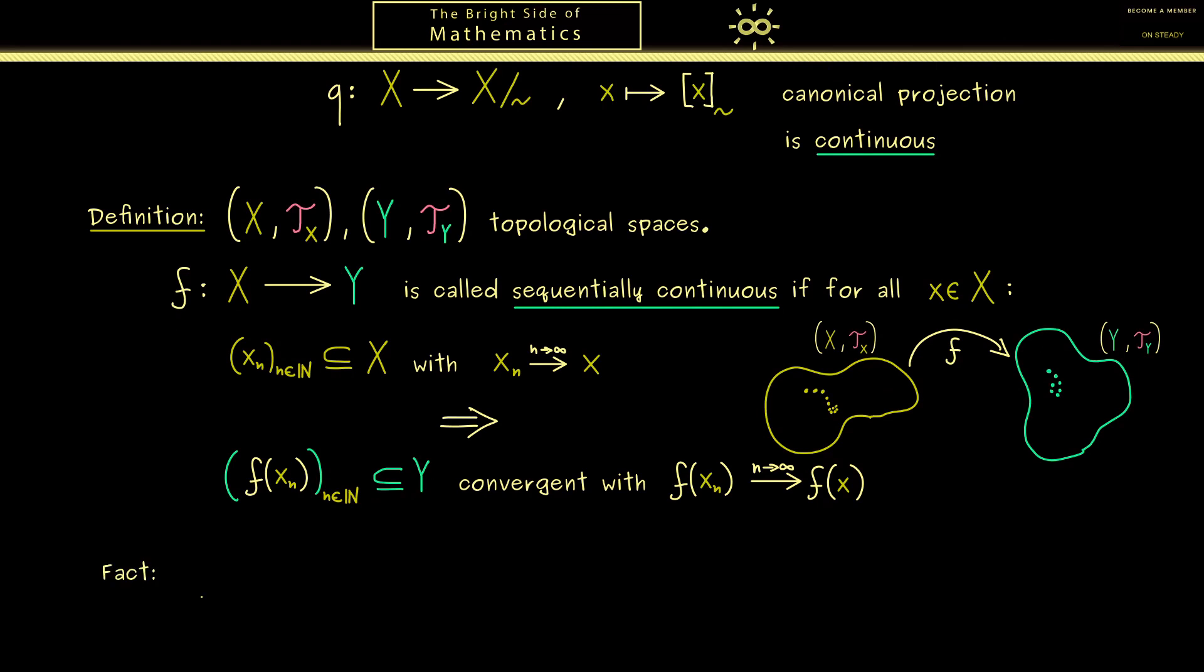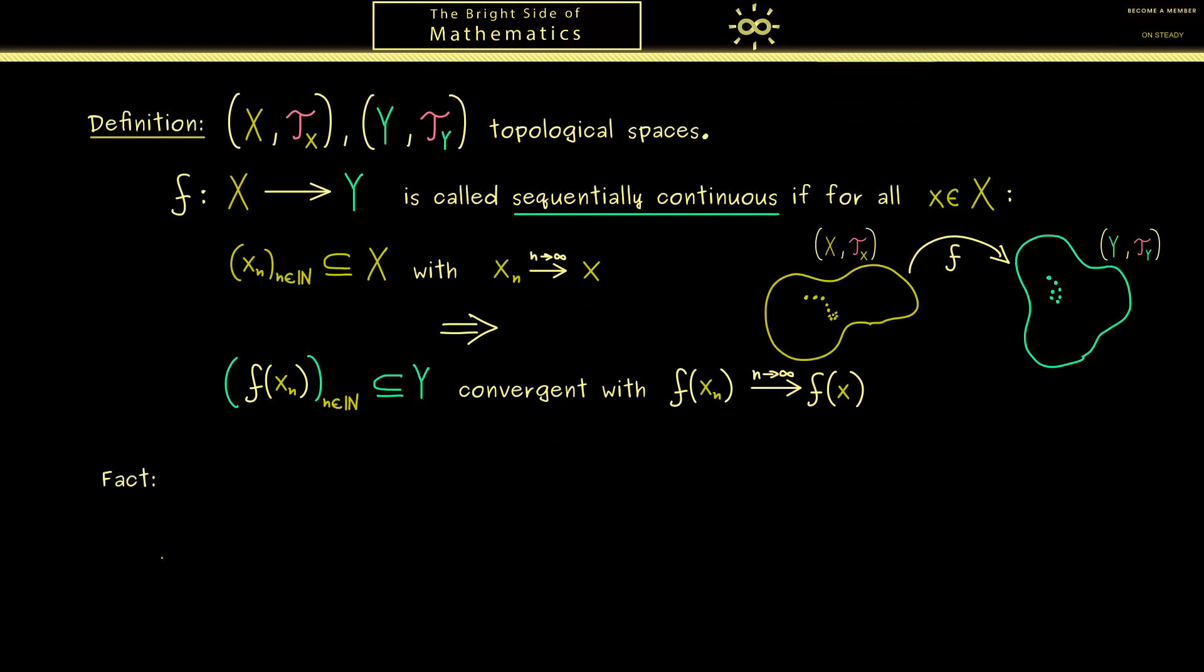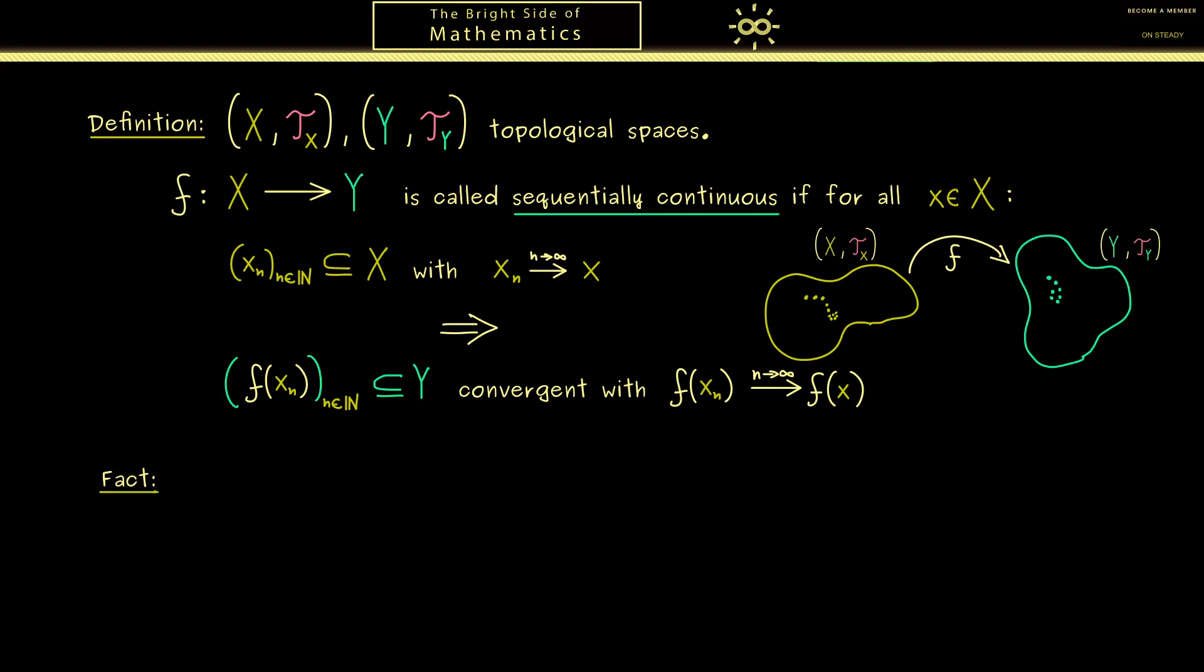So we have the fact that in general we have two continuity definitions. On the one hand the map f could be a continuous map and on the other hand f could be a sequentially continuous map. However the good thing is now being continuous is the stronger property, so we have this implication. So this holds no matter which topological spaces X and Y we consider here.